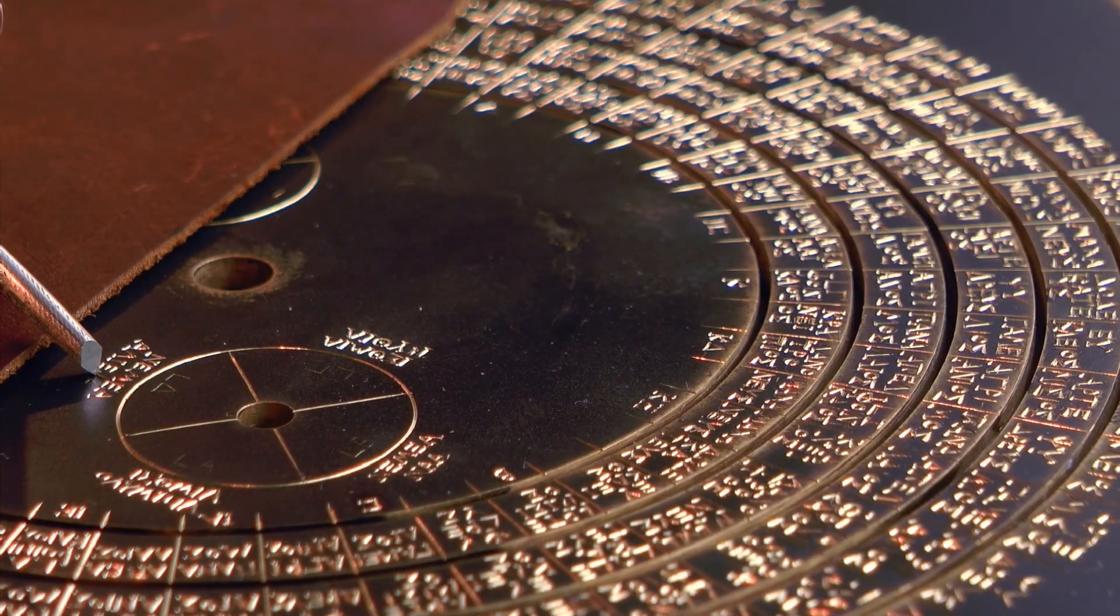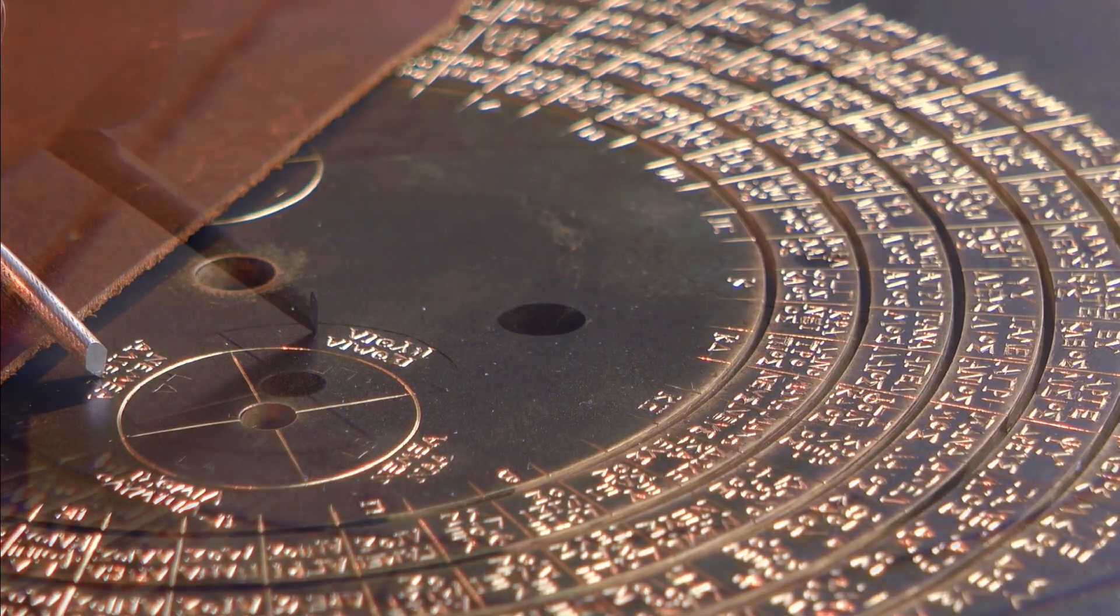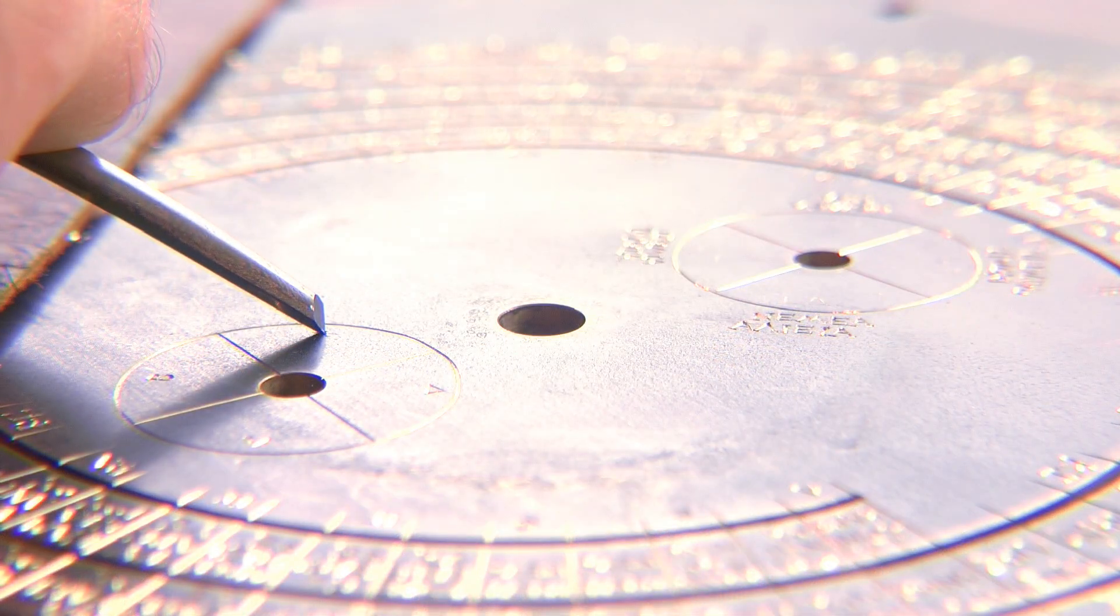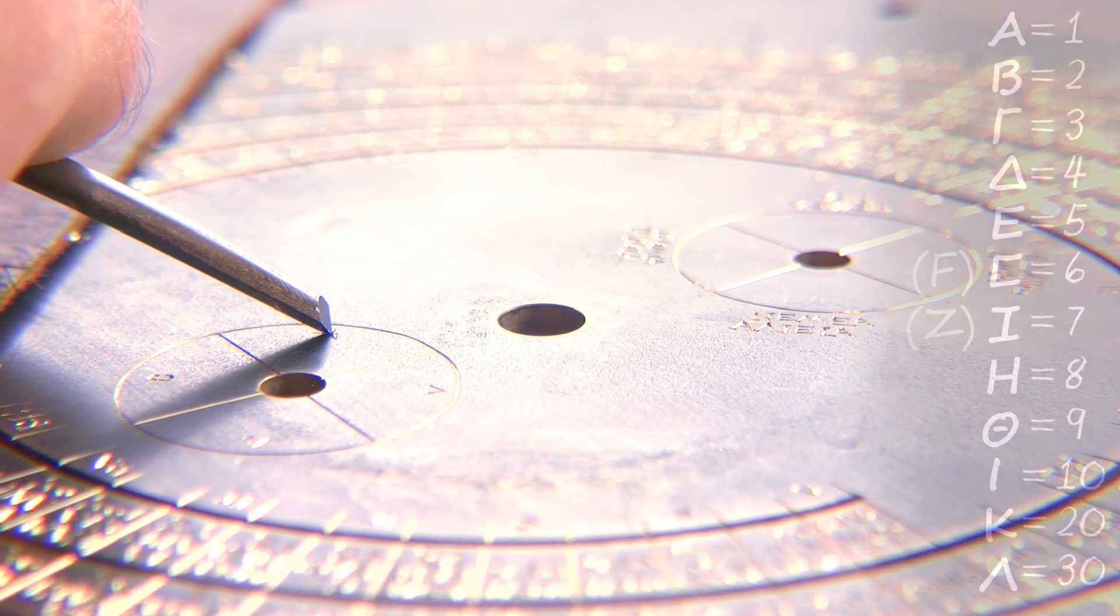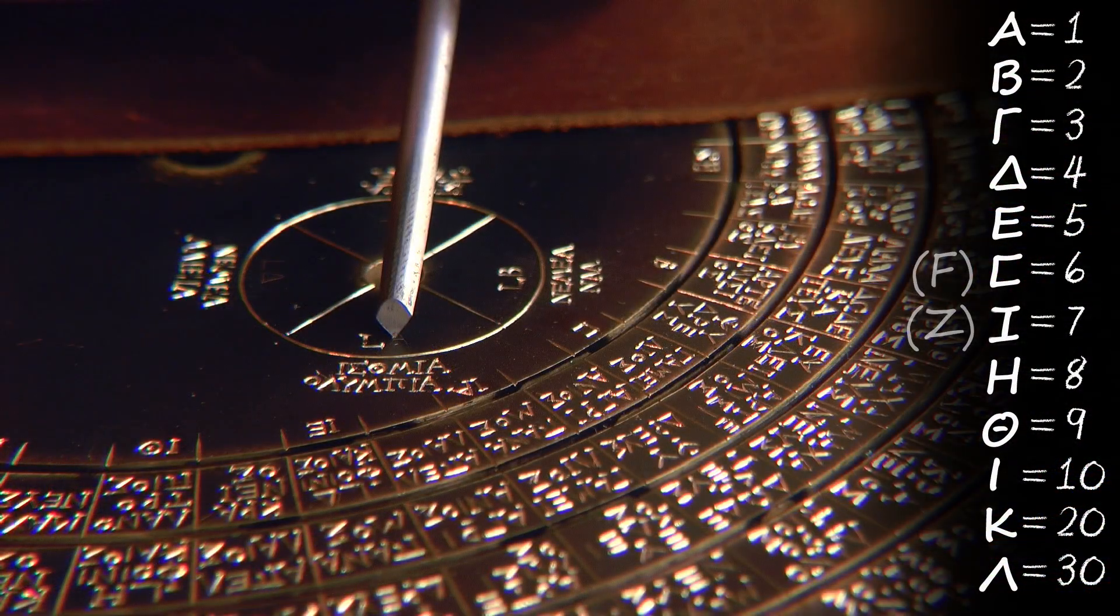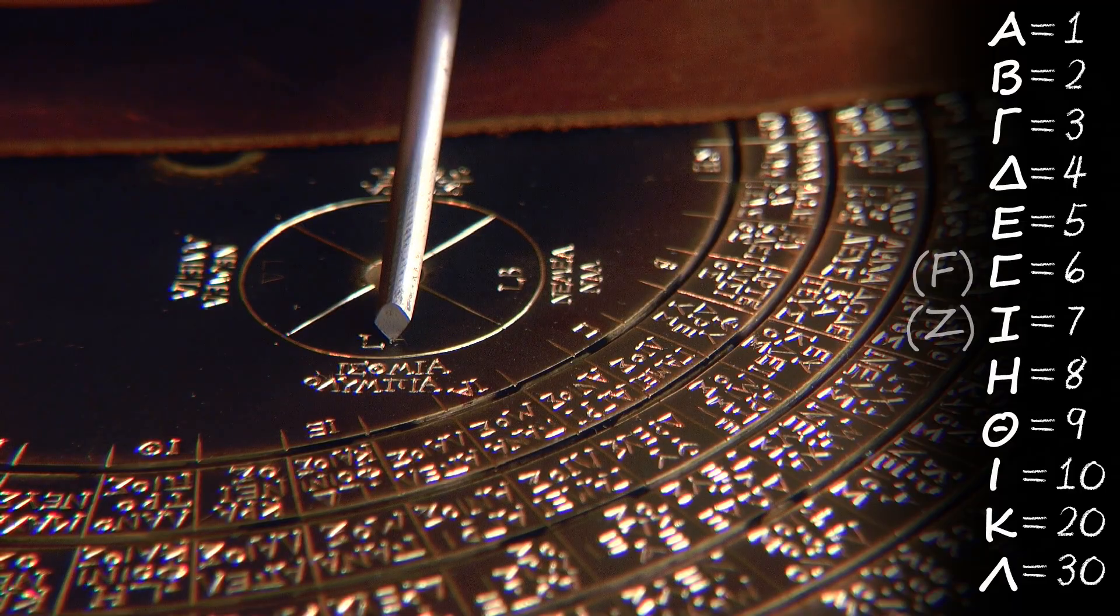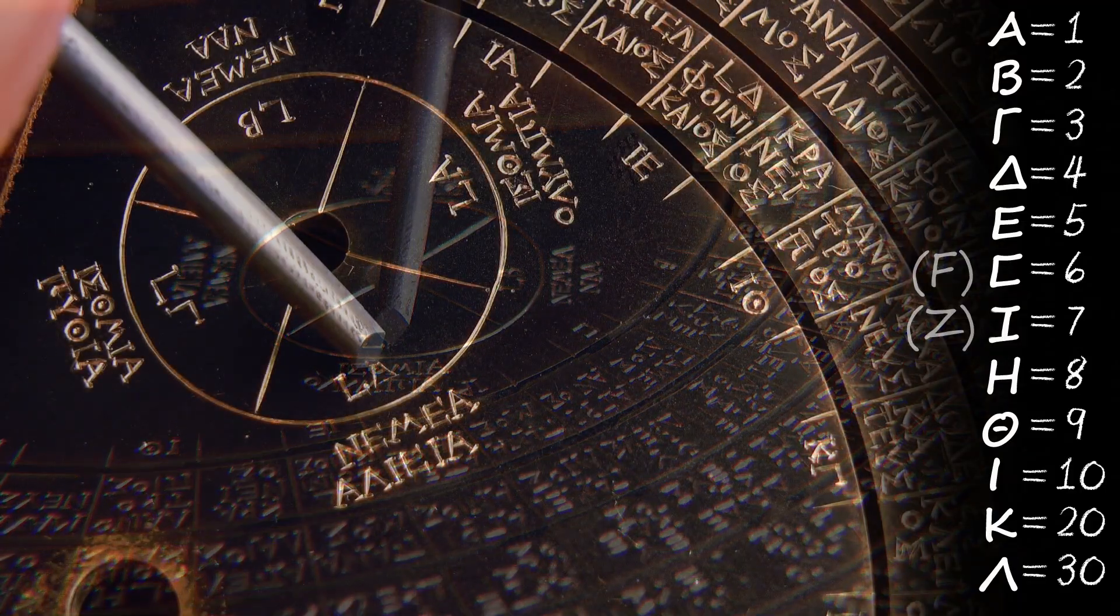So as we approach the completion of this section of the plate, it's worth pointing out that numbers on the mechanism are indicated using the Greek letters for numbers system, where for example the alpha character represents 1, beta 2, gamma 3, and so on.